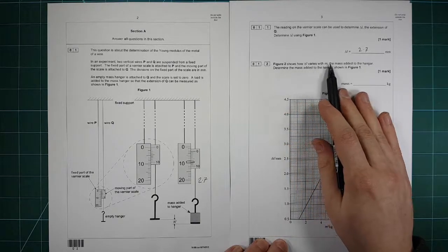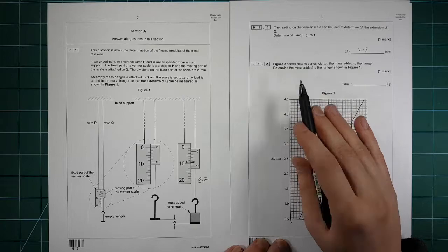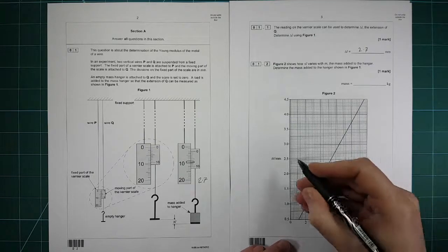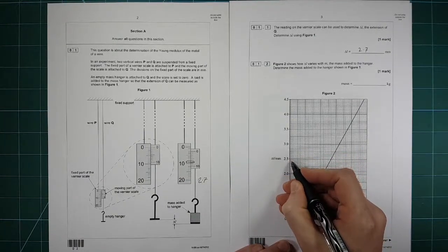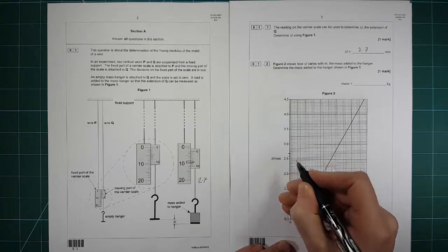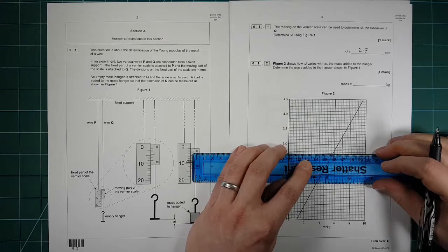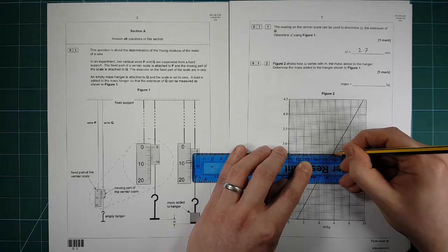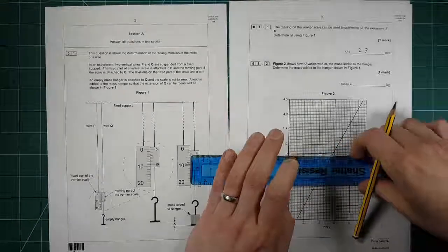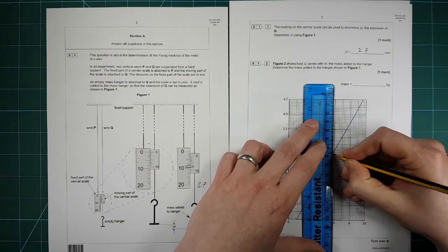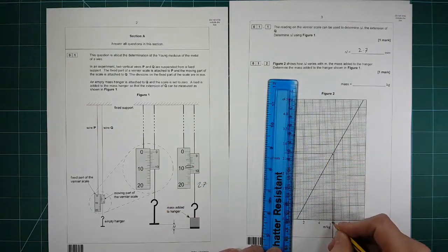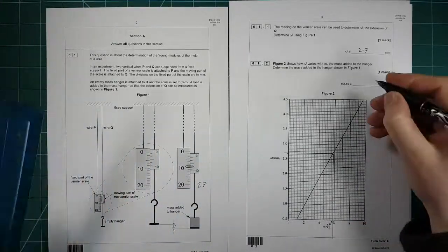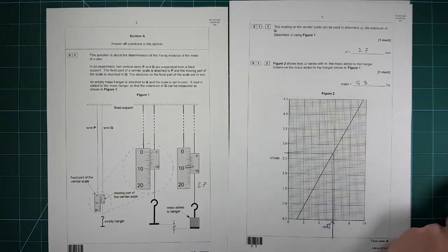Figure two shows how delta L varies with M. Determine the mass for 2.7 millimeters. So we need to find 2.7. That's 2.5, each two little squares is 0.1. So it's going to be there. We've put our ruler on there, we draw a line across. And then from where we hit there down to there. So that's the value there, which is 5.8 kilograms.